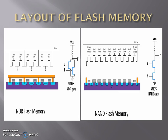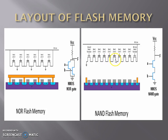Now let's see the layouts of flash memories. In the first figure, the floating gate transistors are connected with each other in parallel and they resemble a NMOS NOR gate, therefore it is known as NOR flash memory. In the second case, the floating gate transistors are connected to each other in series, therefore it resembles a NMOS NAND gate and hence it is called the NAND flash memory.